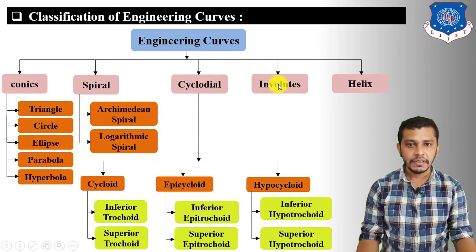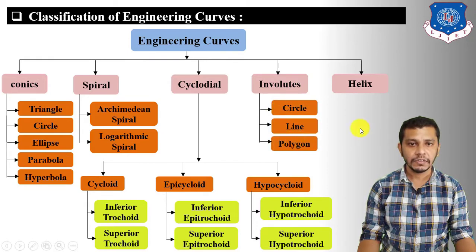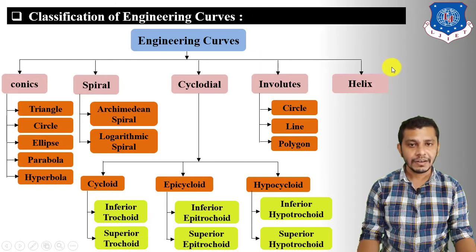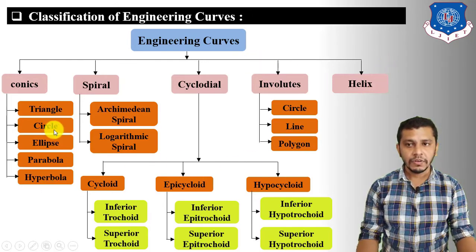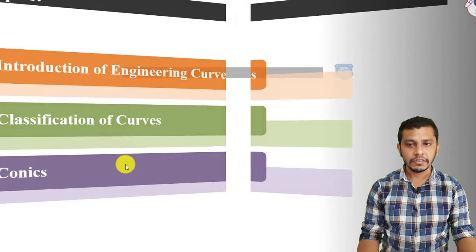Involutes are further classified into involutes of a circle, involutes of a line, and involutes of polygons. Helix does not have any further classification. Now let us move on to conics.